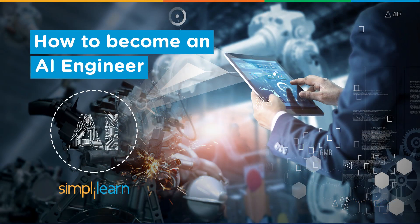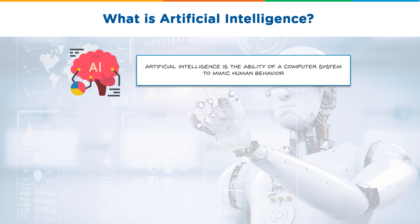Hi guys, I'm Rawal from Simply Learn and today I'm going to tell you how you can become an AI engineer. So first off, what is artificial intelligence? Artificial intelligence is the ability of a computer system to mimic human behavior. This is the sort of intelligence demonstrated by machines, in contrast to natural intelligence shown by humans as well as animals.